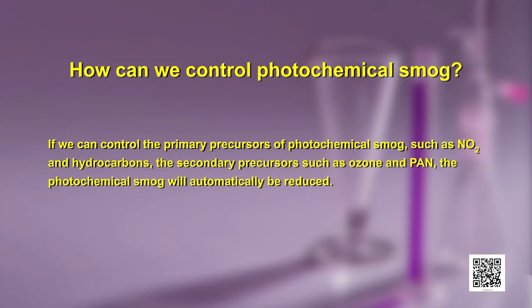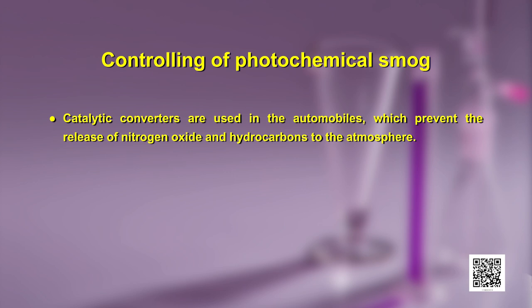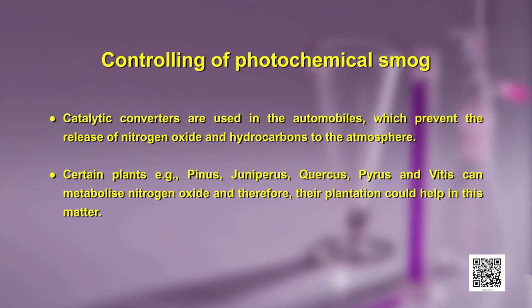To control photochemical smog, if we control the primary precursors such as NO2 and hydrocarbons, the secondary precursors such as ozone and PAN will automatically be reduced. Catalytic converters are used in automobiles to prevent the release of nitrogen oxides and hydrocarbons into the atmosphere. Certain plants — such as Pinus, Juniperus, Quercus, Pyrus and Vitis — can metabolize nitrogen oxides and their plantation could help. Dear students, we have learned how pollution is deteriorating the environment. We will be discussing water pollution and strategies to control environmental pollution. Be safe and keep a high spirit of learning. Thank you.